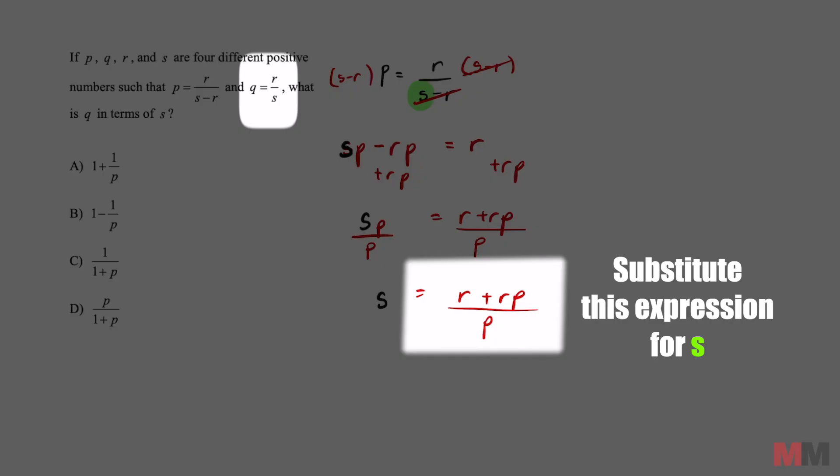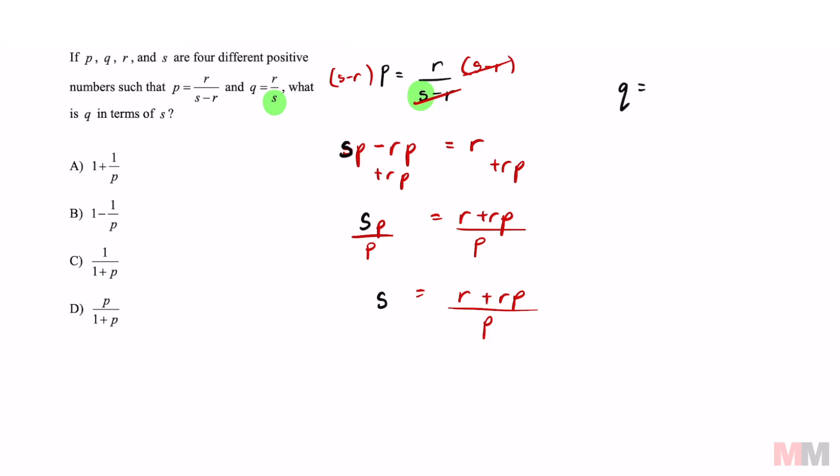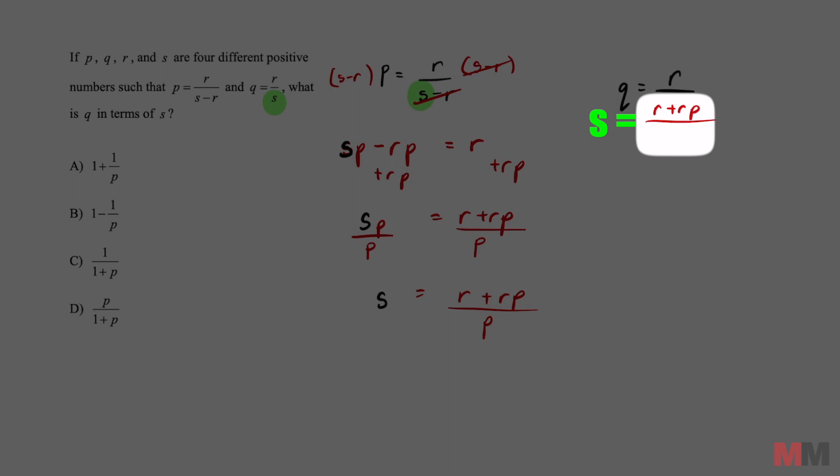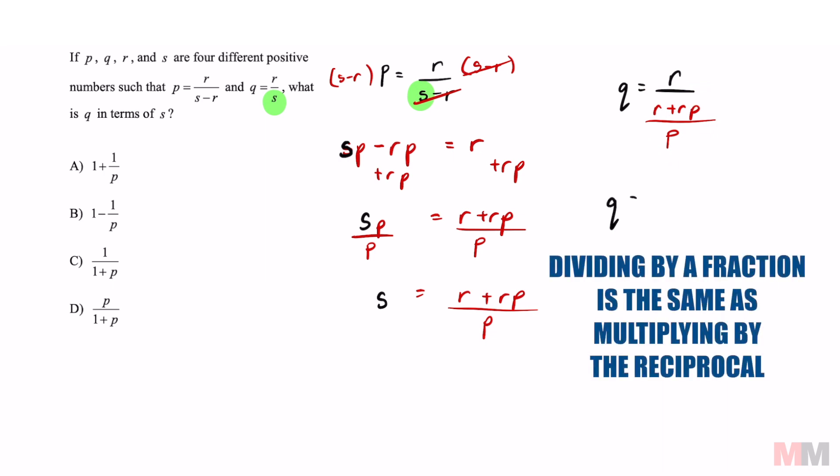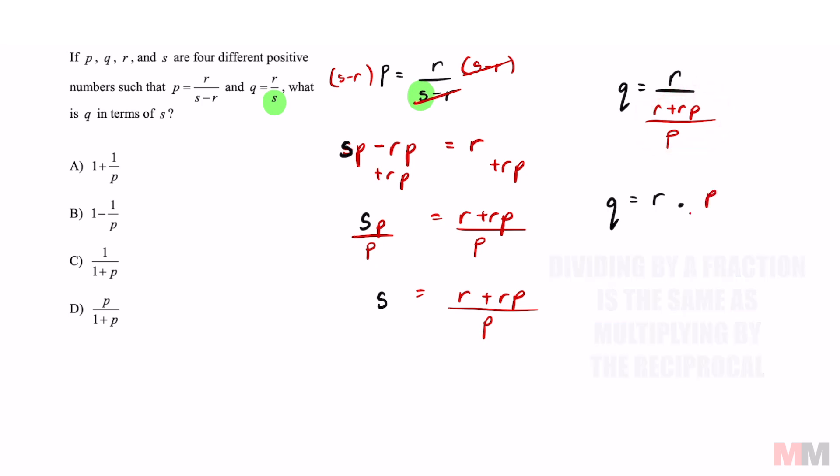That is what we're going to substitute for this letter S right here. So now we're going to get Q equals R divided by R plus RP over P. And don't let that intimidate you. There's a way to fix it. You just got to be patient. If I'm dividing by a fraction, that is the same as multiplying by the reciprocal. So that's going to get me Q equals R times, and we just got to flip this one. That would be the reciprocal P over R plus RP.